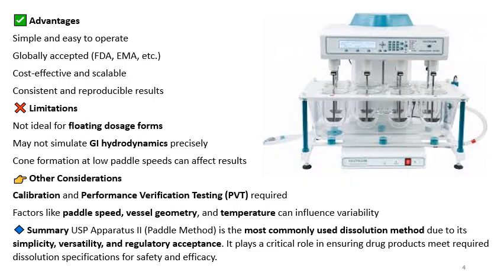A limitation of this apparatus is that it is not ideal for floating dosage forms. If the formulation is floating, you can use sinkers or go for USP apparatus 1, the basket apparatus. It may not simulate GI hydrodynamics precisely. Cone formation or coning at the bottom of the dissolution bowl at low paddle speed can also affect the results.